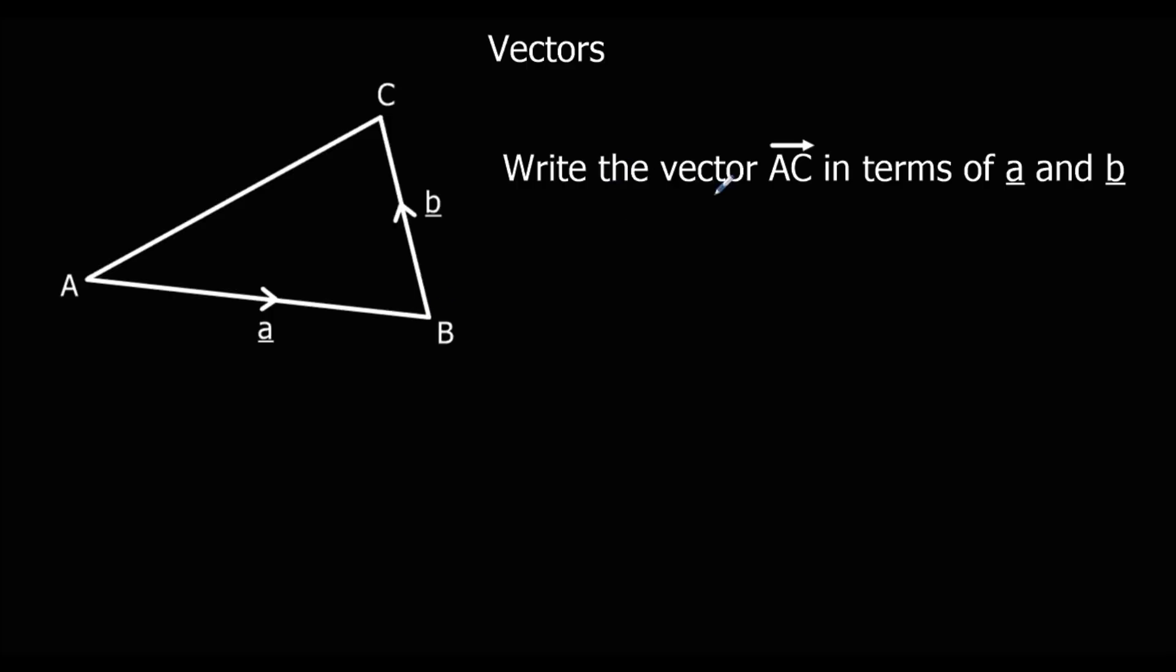So we want to write down A to C. We can't go along this path because we don't know what it's called, so we have to take the long way around. So we're going to go A to C by going A to B, and then B to C.